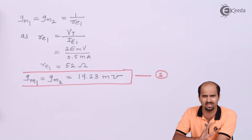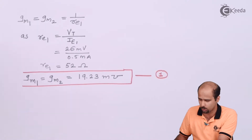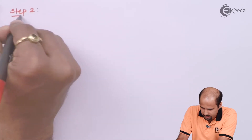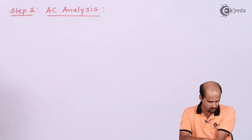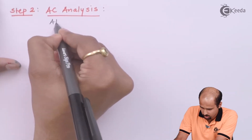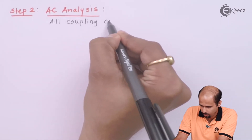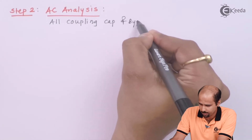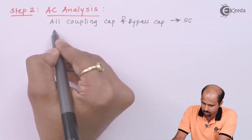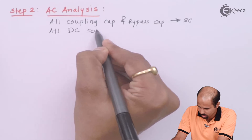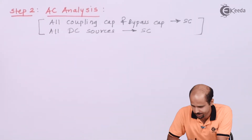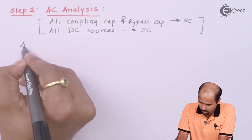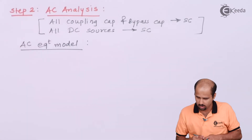We can also calculate VCE1 and VCE2, but that is not important for this numerical. Let's move to step 2: AC analysis. For AC analysis, all coupling capacitors and bypass capacitors are short-circuited, and all DC sources are shorted.